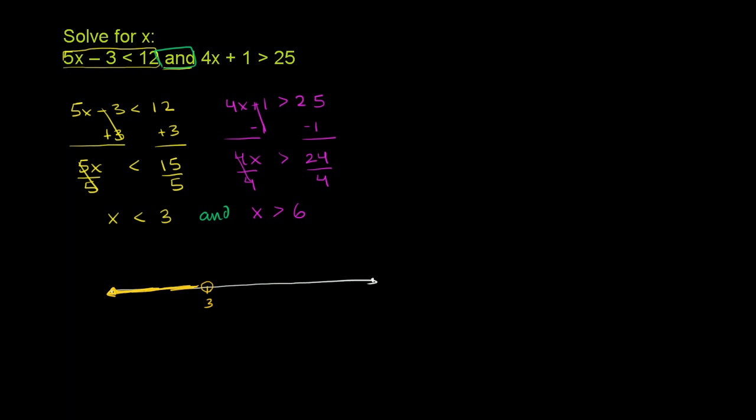The second constraint says that x has to be greater than 6. So if this is 6 over here, it says x has to be greater than 6. It can't even include 6. And since we have this 'and' here, the only x's that are a solution for this compound inequality are the ones that satisfy both, the ones that are in the overlap of their solution set.